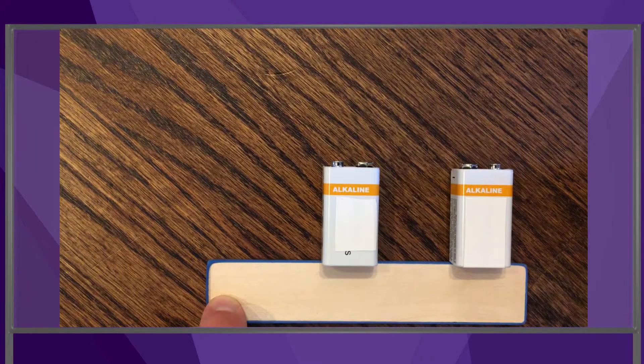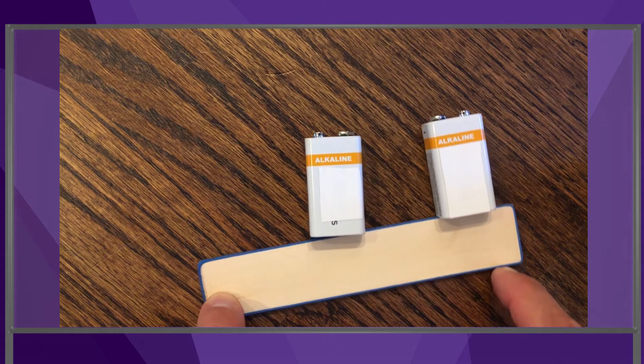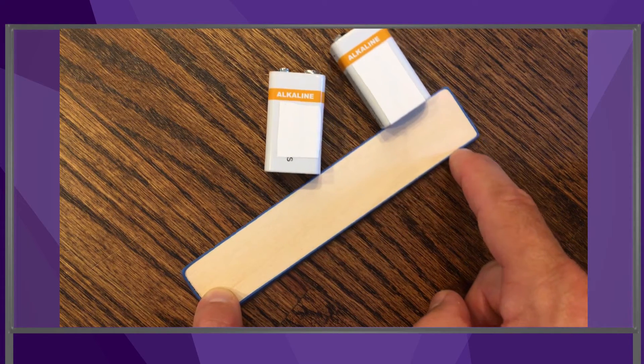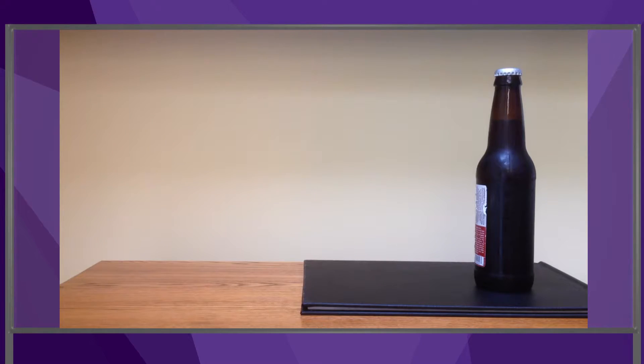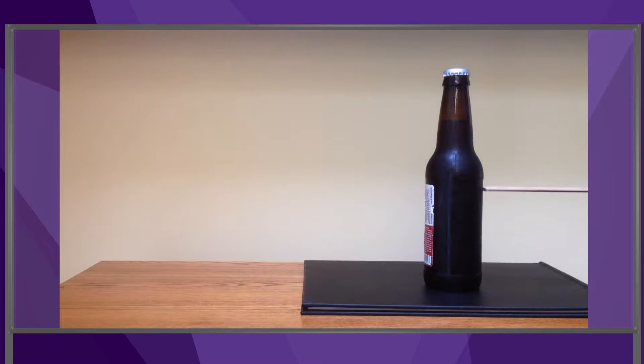For example, to plan how to push an object on the floor, the robot should be able to predict whether the object will stay fixed to the pusher or move relative to it. The robot should also be able to predict if a pushed object will slide or if it will topple over.